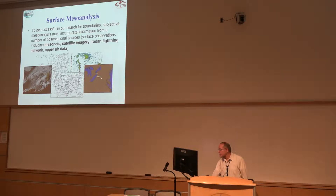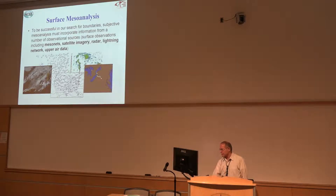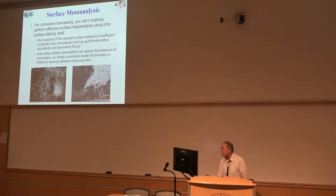Satellite, meso-networks, even at 500 millibars — if we know where there is a system and a tight thermal gradient, we know from a three-dimensional frontal structure there's probably going to be a front somewhere out ahead of that system. We can use radar to help us see where storms have developed and perhaps they're associated with boundaries. We can look at lightning data.